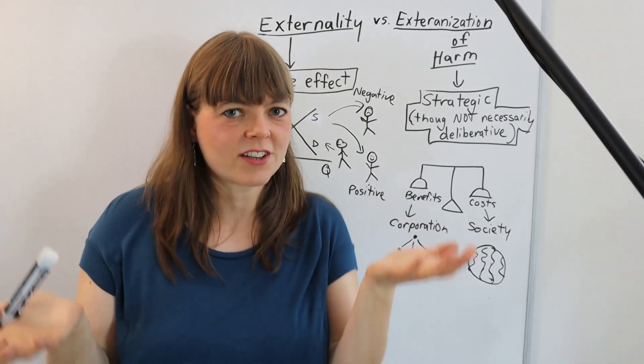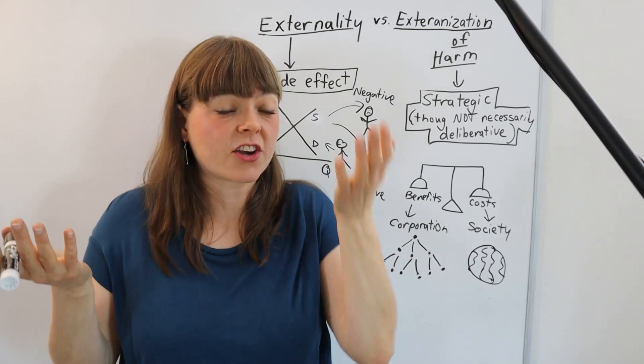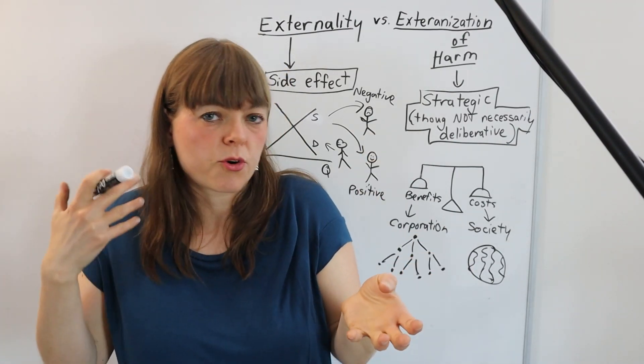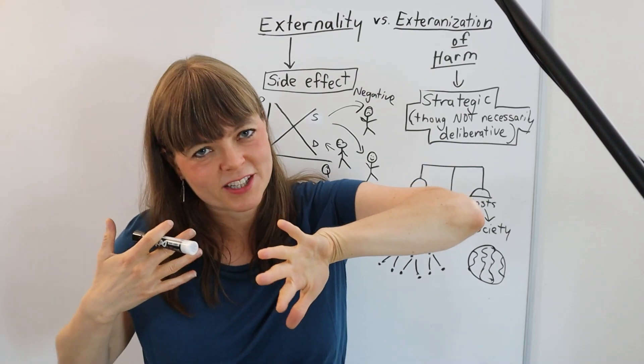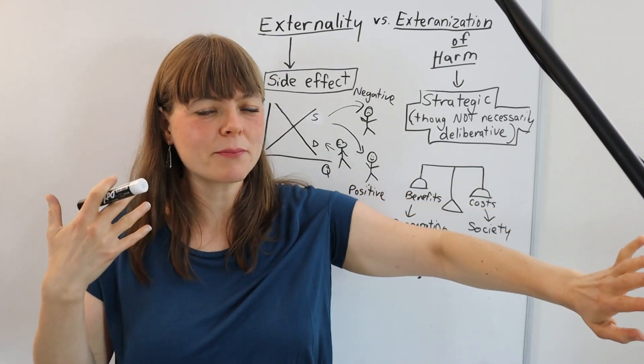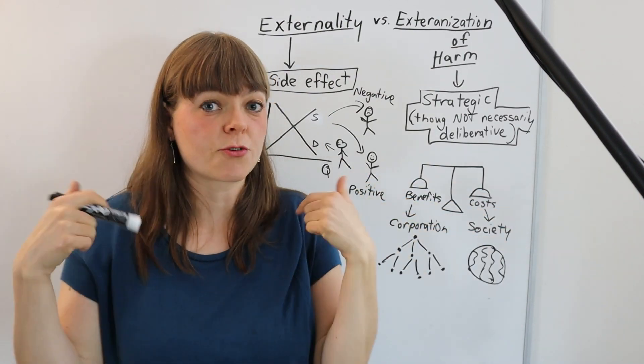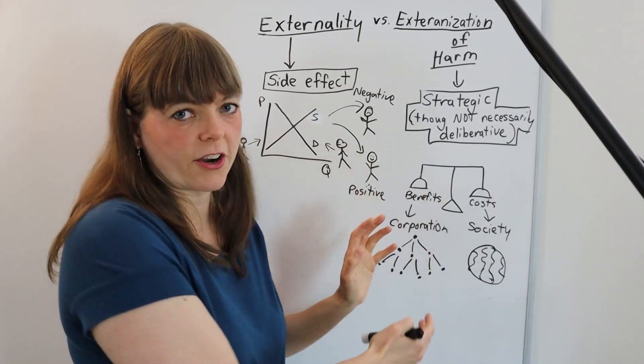So they're weighing costs and benefits. But because the costs are not borne by themselves, they end up being shoved to the side of the whiteboard. And the costs and benefits that are relevant to the decision makers are borne here.